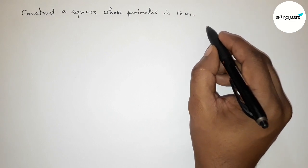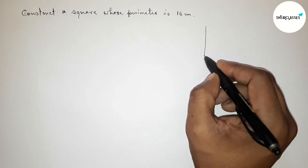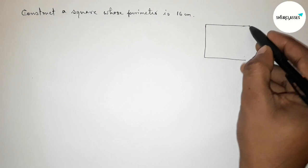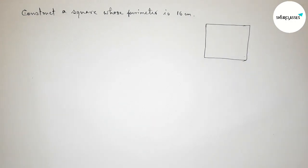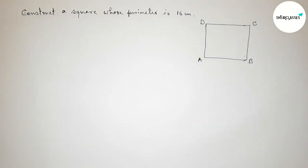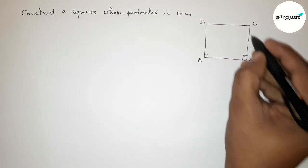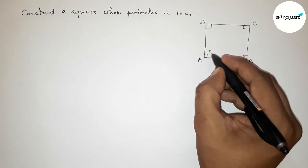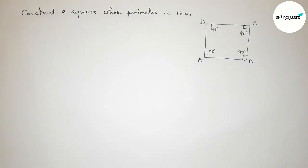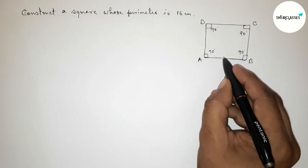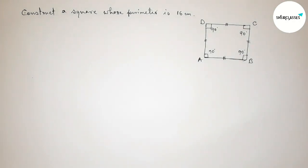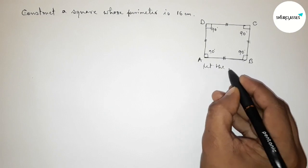First we have to find out the length of each side of the square. Roughly drawing a square here and labeling it A, B, C, D. We know that all the angles of a square are equal and 90 degrees. We also know that all the sides of a square are equal.